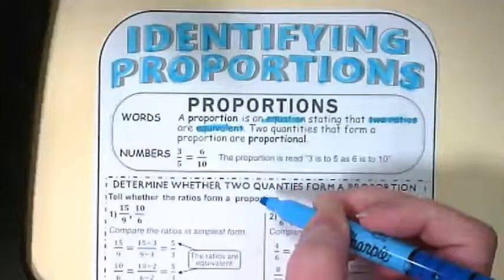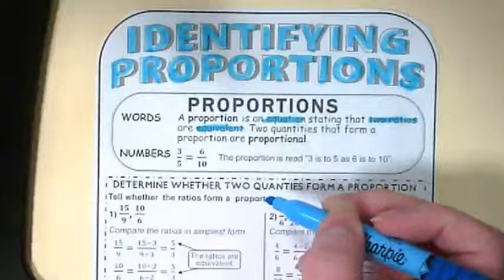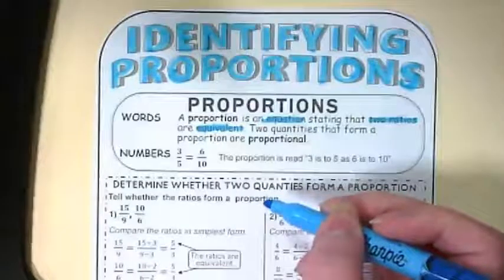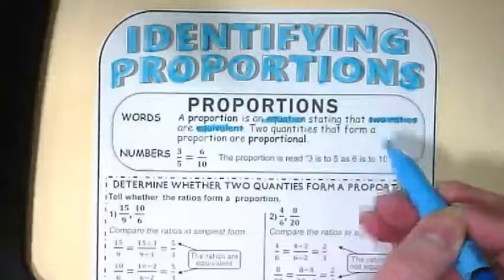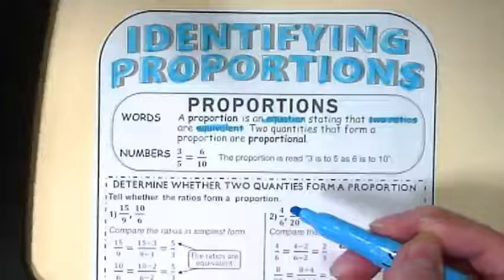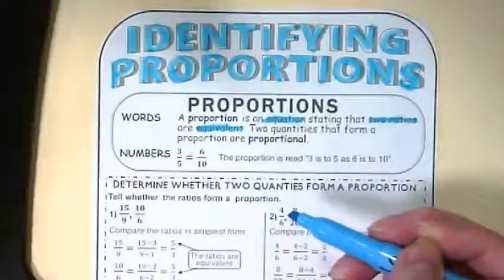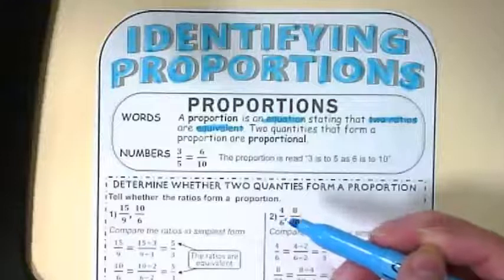Two quantities that form a proportion are proportional. This is going to look very much like equivalent fractions did when you all first started learning them. The difference is proportions are about ratios and ratios are comparing two quantities. The things that were true about equivalent fractions are also true about ratios when they are in proportion to each other.